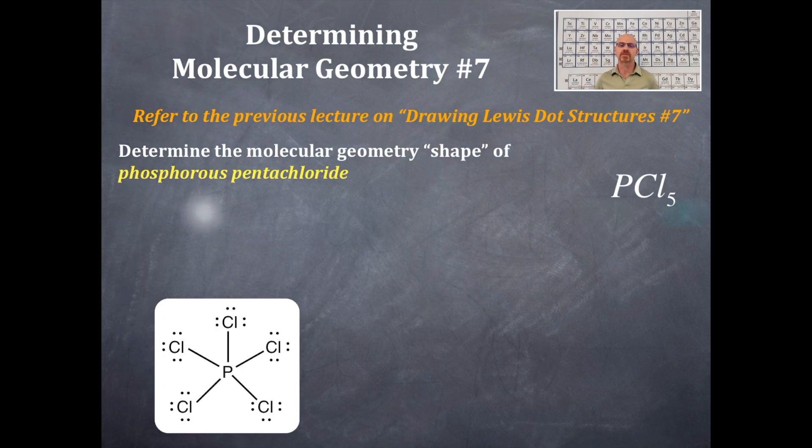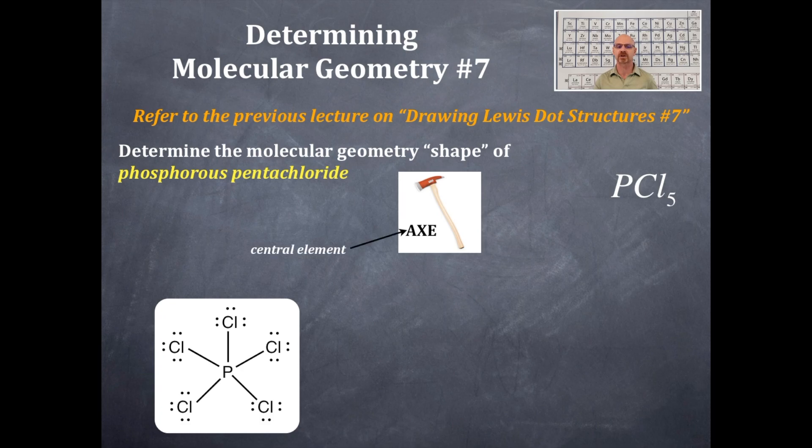From that Lewis dot structure of phosphorus pentachloride, we're going to look at our X. We're going to look at our central element, the surrounding elements, and the number of lone pairs around the central element. The phosphorus is the central element. That is the A.